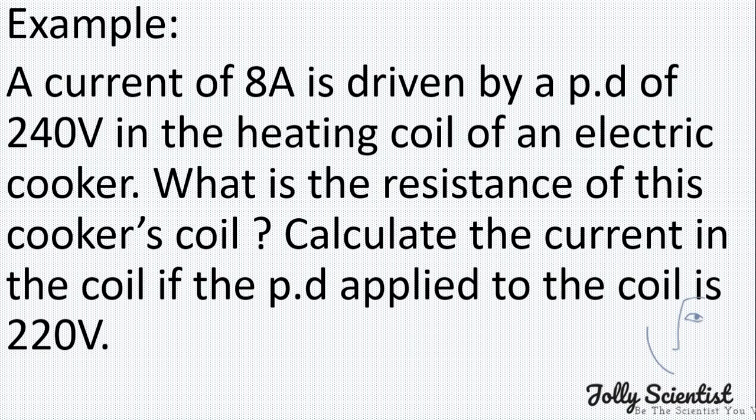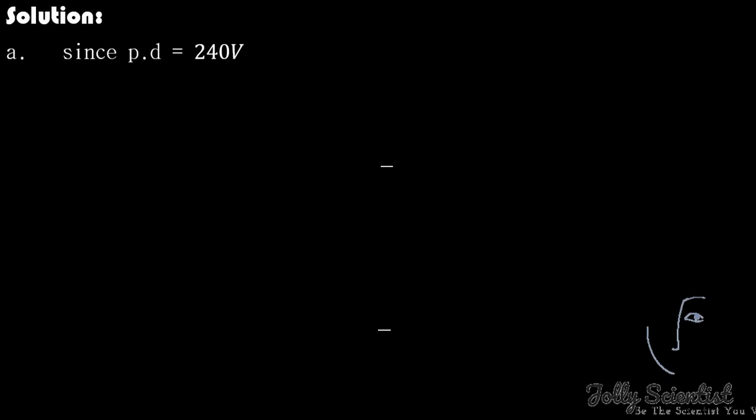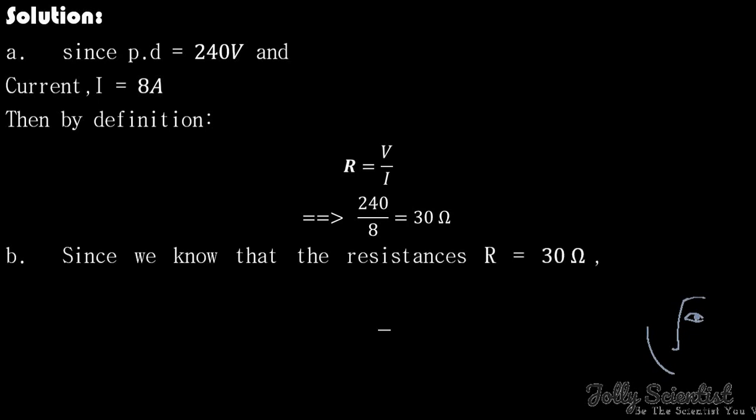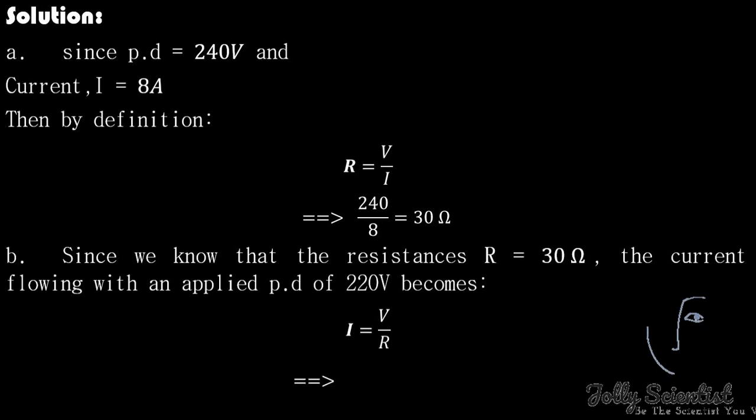A current of 8A is driven by a potential difference of 240V in the heating coil of an electrical cooker. What is the resistance of this cooker's coil? Calculate the current in the coil if the potential difference applied to the coil is 220V. Since the potential difference equals 240V and the current equals 8A, then by definition, we say that the resistance R equals V over I, which implies 240 divided by 8 equals 30 ohms. B. Since we know that the resistance R equals 30 ohms, the current flowing with an applied PD of 220V becomes I equals V over R, which is 220V divided by 30 ohms equals 7.33 amperes.